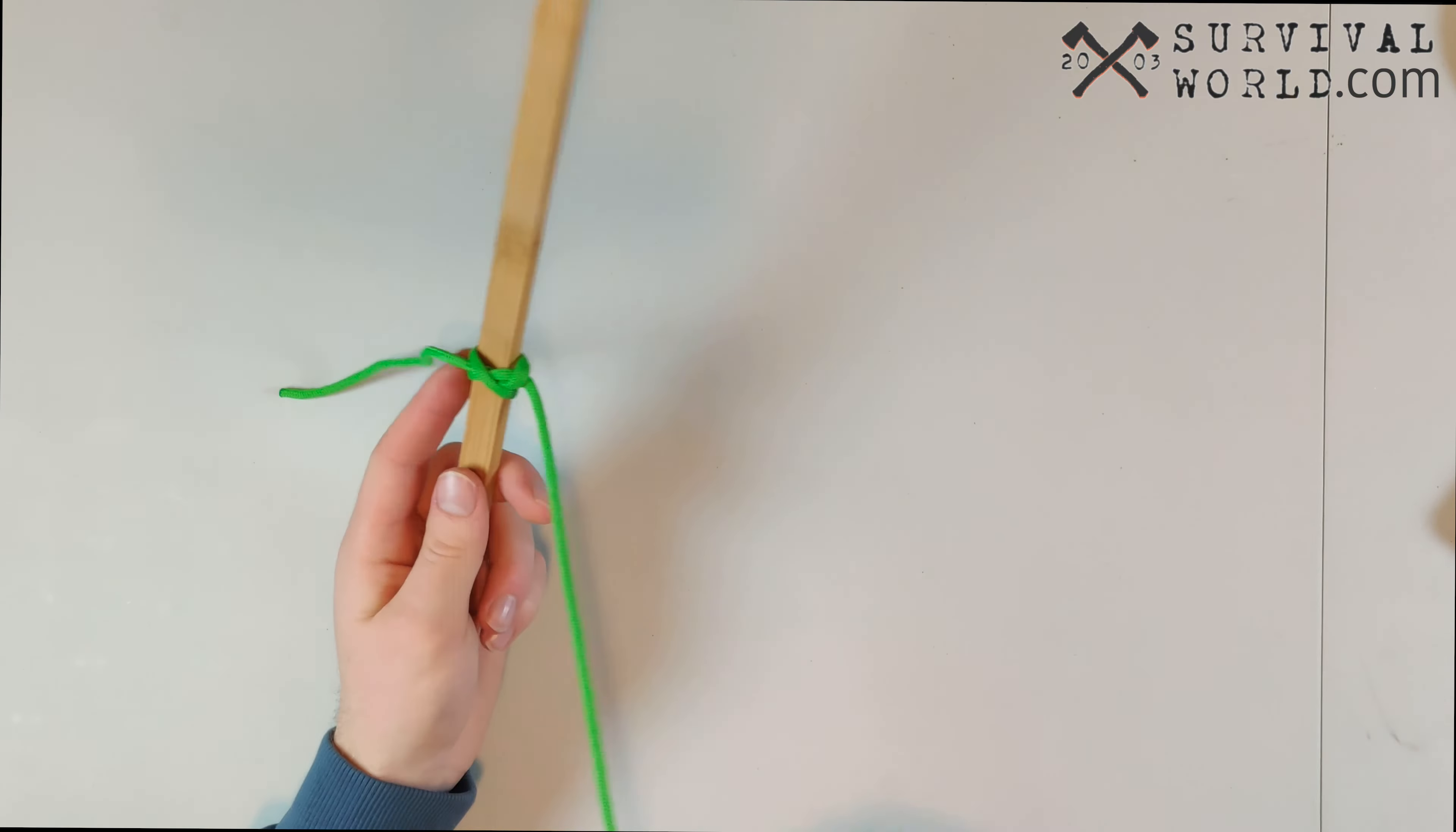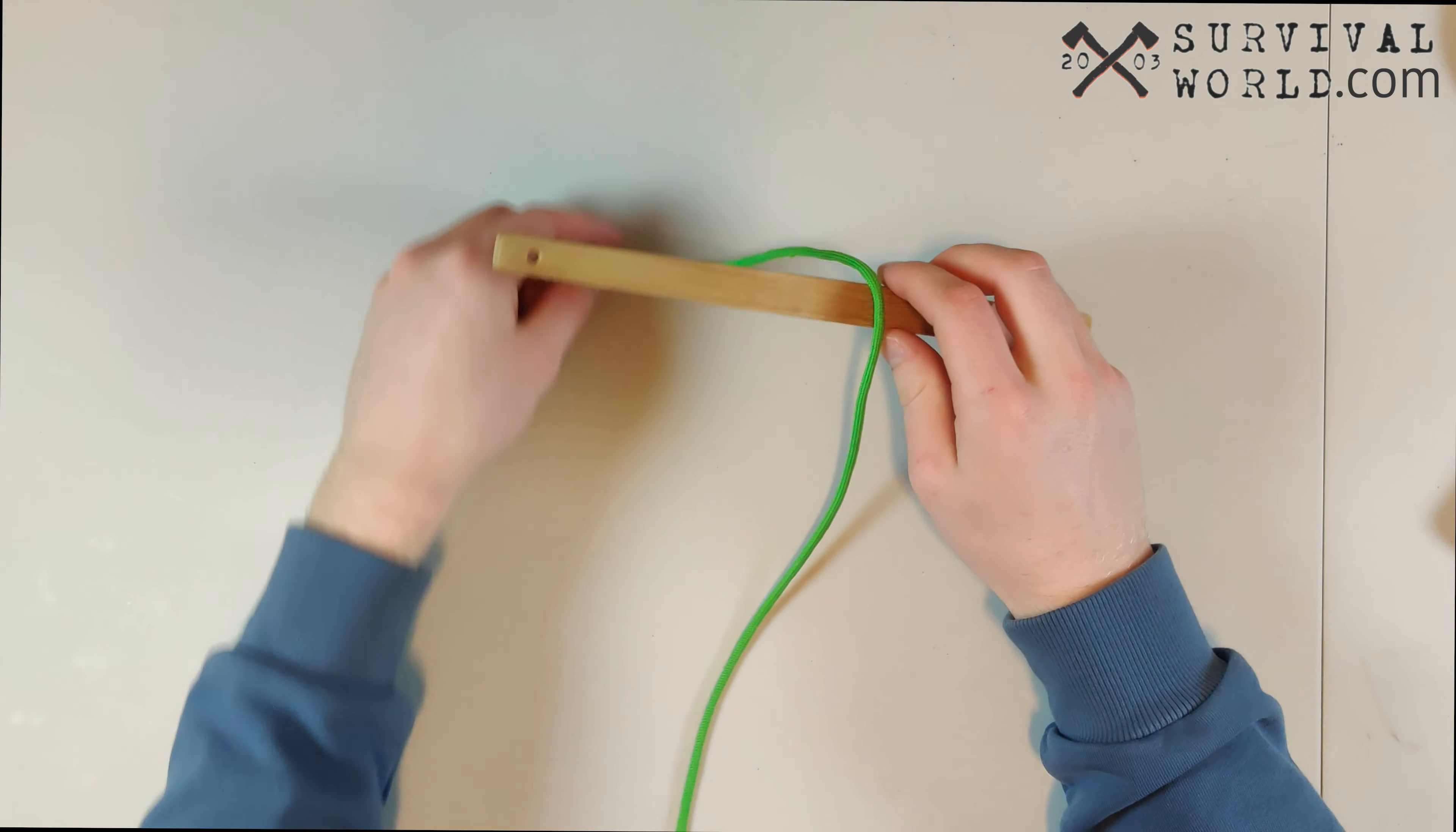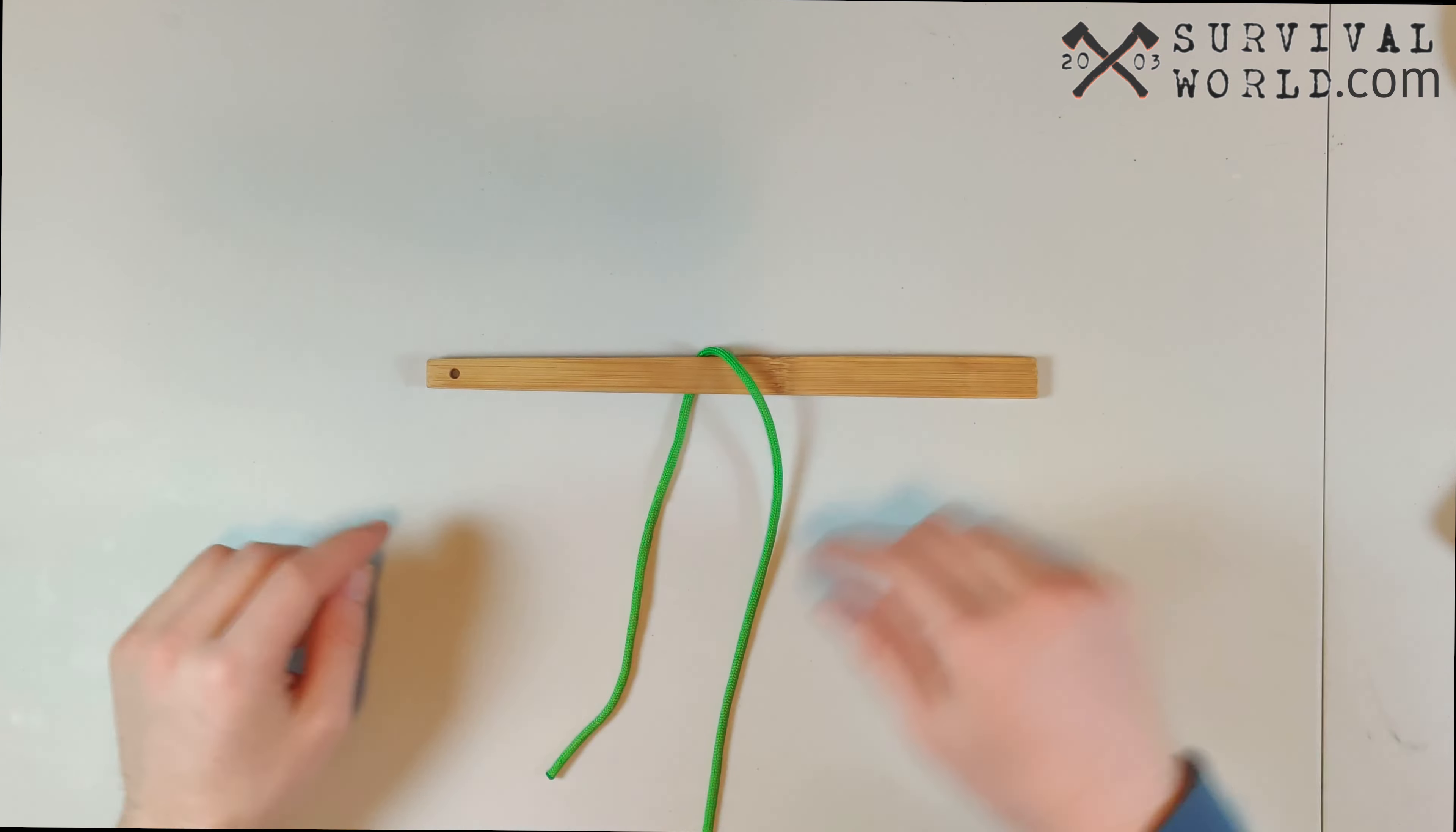The constrictor hitch, as implied by the name, is a very strong knot that tightens itself around an object. It's pretty similar to the clove hitch, but it's a lot stronger and safer while still remaining pretty fast to tie. So let's dive in on how to tie the constrictor hitch.